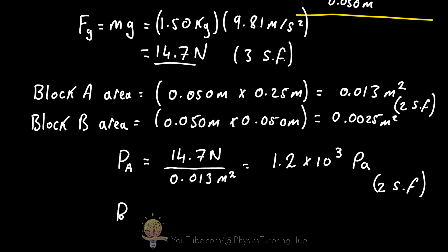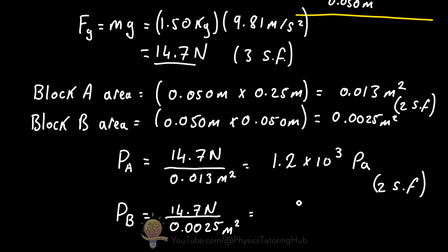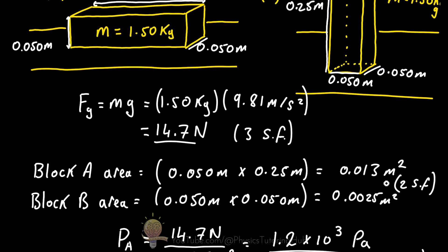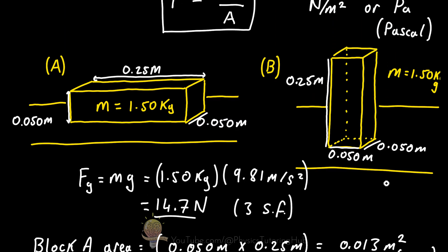Block B has a pressure of 14.7 newtons divided by 0.0025 meters squared. This pressure is a lot higher because of the smaller area, and we get a pressure of 5,900 pascals to two significant figures. So the pressure of block B on the surface is nearly five times higher than that of block A, even though both blocks have the same mass.